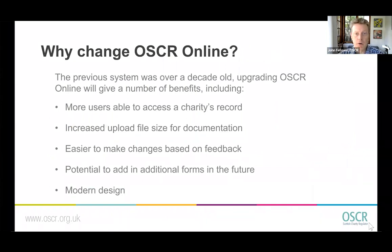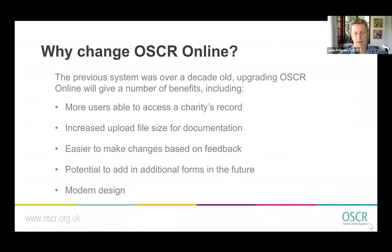So why have we changed OSCAR Online? The actual system that underpins OSCAR Online is over a decade old, which is quite old for an IT system. Because of its age and other factors, it was not as secure as it could have been and not as flexible. What we've done over the summer, after a couple of years' worth of work by Cameron and others, is to replace the underlying system — the database, the CRM — where all the records and details are held for OSCAR staff to work with, and from which we extract information to publish on the register.